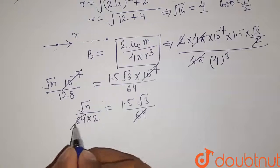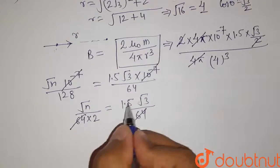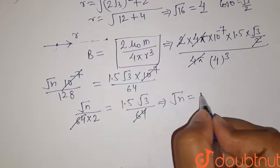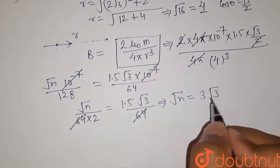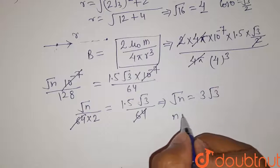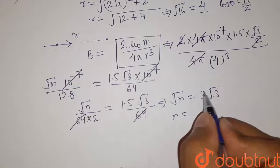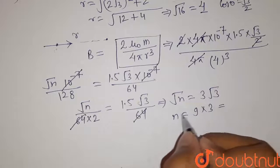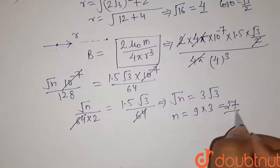So this 64 and this 64 will get cancelled out, and this 2 will multiply here. So we have √n is equal to 3 into √3. Now squaring both sides, so we have n equals to 3² will be 9 and √3² will be 3. So the value of n will be equal to 27.